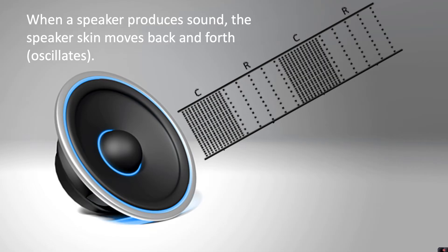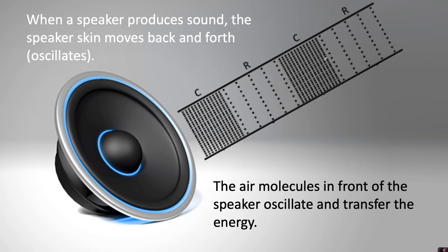When a speaker produces sound, the speaker skin moves back and forth, and we call this oscillates. The air molecules in front of the speaker oscillate and transfer the energy. When this skin is moving out and back, we describe that as oscillating—it's moving back and forth. That will cause the air particles in front of the speaker to also vibrate and move back and forth, and it will create these areas of compression and rarefaction which will pass on the energy to the neighbouring particles.